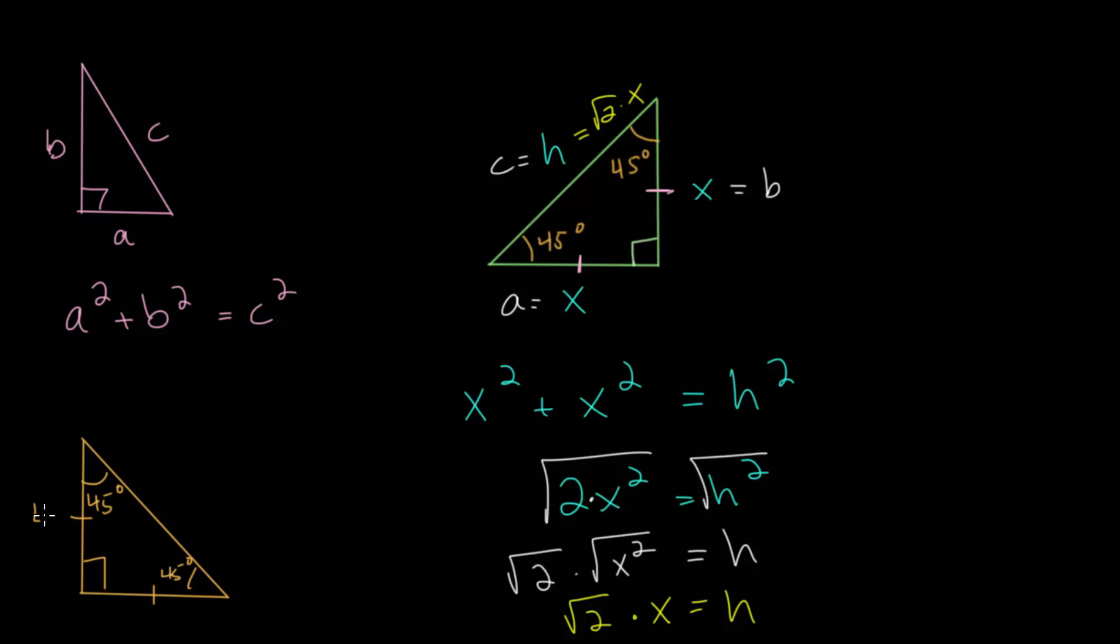But let's say we know this is 4 and that would make this 4. Then based on what we just figured out, we're essentially just plugging in 4 for x. This would be 4 multiplied by the square root of 2. Or if you want, you can put the square root of 2 in front, but typically we'll put the number in front. So more typically, you might see this as x multiplied by the square root of 2.